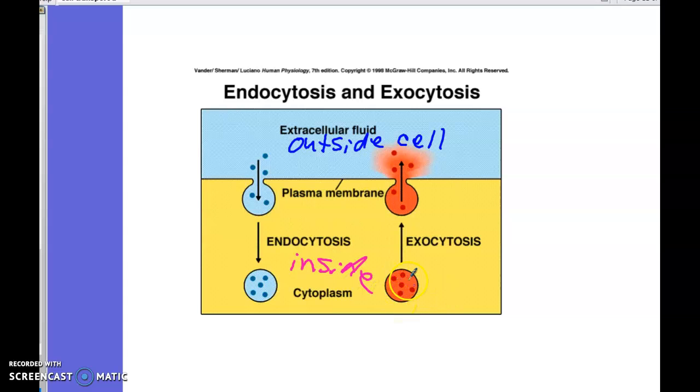Exocytosis is the opposite. Maybe there's some proteins that were made inside of the cell that need to get to the outside, outside of the cell. So those proteins get made by ribosomes on the endoplasmic reticulum. They go through the Golgi apparatus that packages them up into vesicles. They move to the cell membrane. Once it fuses with the cell membrane, the cell membrane opens up, basically opens the door and kind of spews them out, if you will.